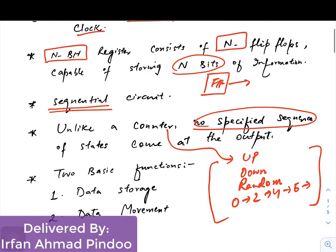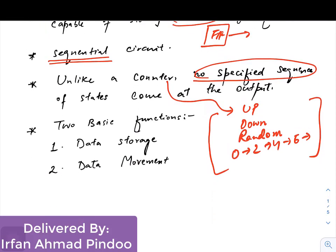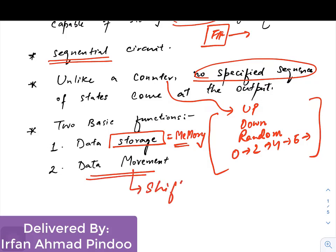There are two important functions a register can perform. The first is data storage, which is utilized to create memory. The second is data movement, which is used for shifting data. So a register can be used either as a data storage element acting as memory, or for data movement, which is the shifting property.